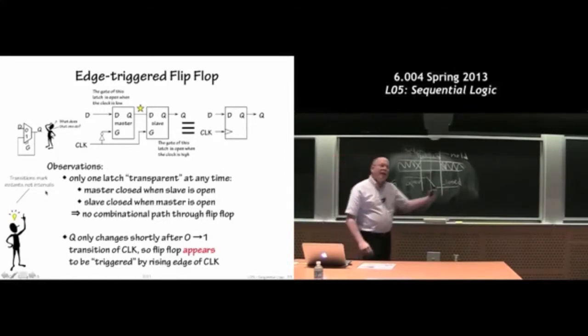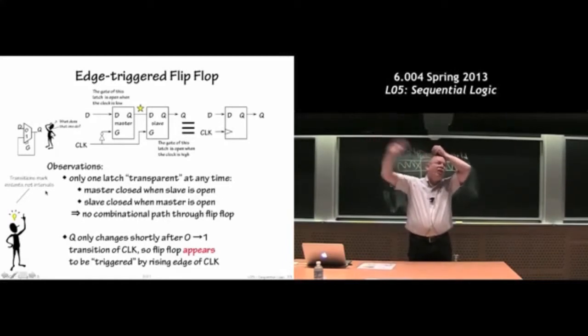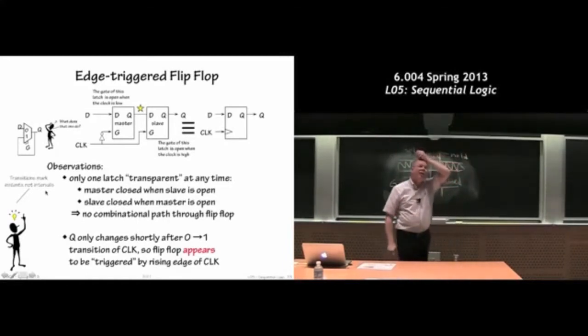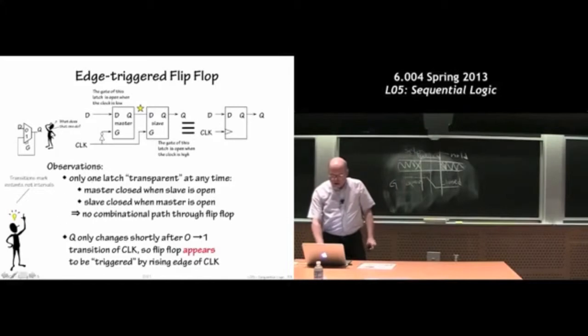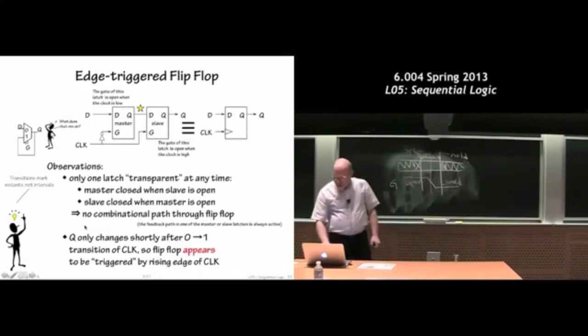Okay, so when I say another word for the latch being open, the gate being open, is the latch is transparent. In other words, d is being reflected on the q output after tpd. That's when I talk about a transparent latch. That's a latch that's letting information through and is not in storage mode. So we have no combinational path through the flip-flop. And we should notice that at any given time either one of the latches is in transparent mode, the other one is in this neat positive feedback loop mode. So that means that somebody is always remembering something. So we're always in a situation where one of those positive feedback loops is busy remembering.